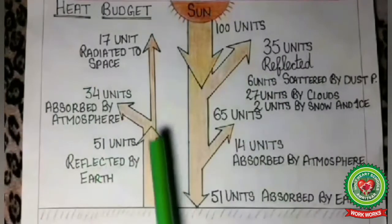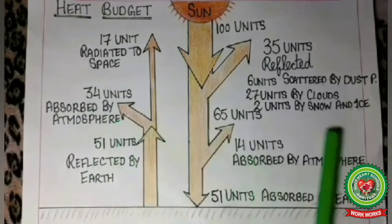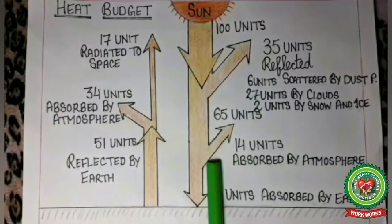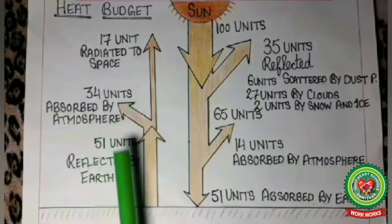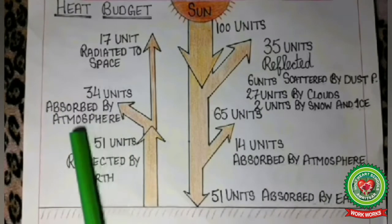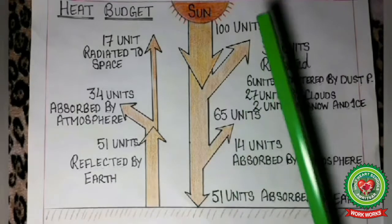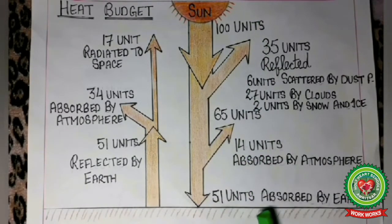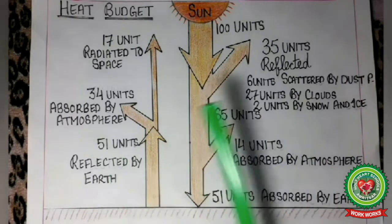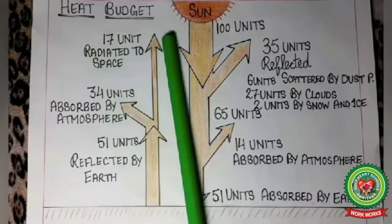In this diagram, we can see that the atmosphere is heated by 34 units of terrestrial radiation — the heat released by the earth — and 14 units of solar radiation coming from the sun. The atmosphere is heated more by terrestrial radiation because terrestrial radiation is in the form of long waves and the atmosphere is a very good absorber of long waves, whereas solar radiation is in the form of short waves and the atmosphere is a bad absorber of short waves. The earth gains 51 units of solar radiation and loses all 51 units by terrestrial radiation — no gain, no loss. So this is called the heat budget or the heat balance of the earth.